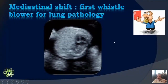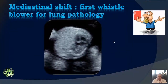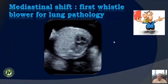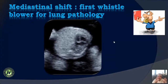In day-to-day practice, we don't always make it a point to look at the lungs specifically. Just as we look at four chambers — RBUT, LBUT — we often do not look at lungs, though we are supposed to. There are some whistleblowers which make us aware that something is wrong in the thorax or in the lung. The first whistleblower is mediastinal shift.